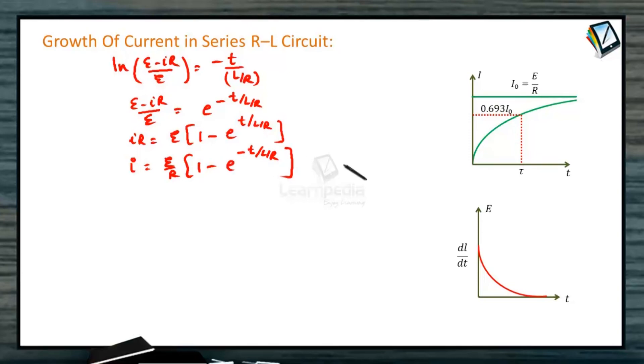Now, here two things we will substitute. E by R, let me call this the maximum current, equal to I0. I0 is maximum current. Similarly, L by R, let me call this tau. This is called time constant. Then this equation becomes I equals I0 times 1 minus e to the power minus t by tau. This is how the current will grow in the LR circuit.